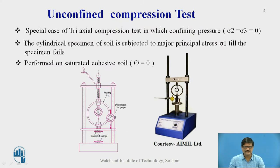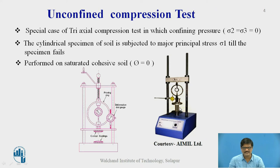The unconfined compression test is a special case of triaxial compression test in which the confining pressure is zero. The cylindrical specimen of the soil is subjected to major principal stress sigma1 only till the specimen fails. This experiment is performed on only saturated cohesive soil. In the figure, you can see a typical arrangement of the loading — it is basically a loading frame wherein a cylindrical soil sample is kept and the compressive load is applied. We keep on applying this load till failure takes place, and simultaneously we measure the compression taking place in the soil sample.